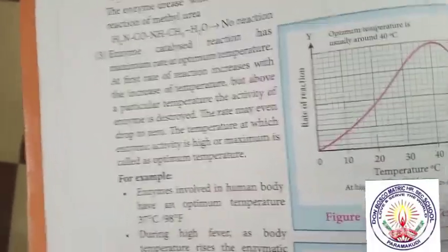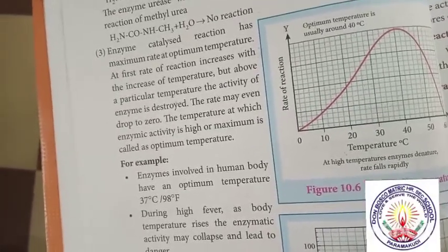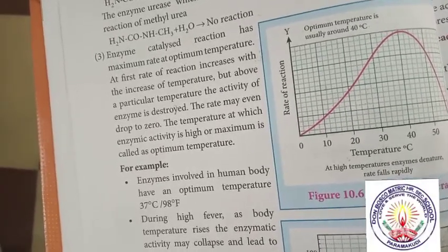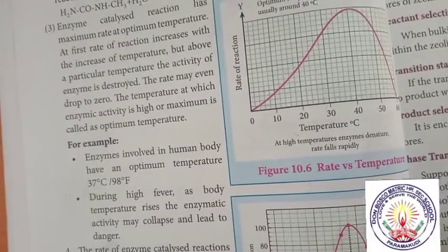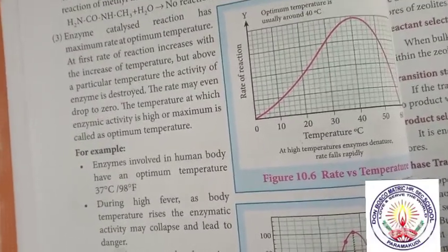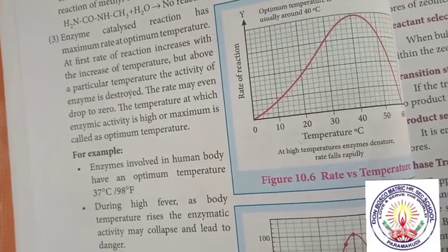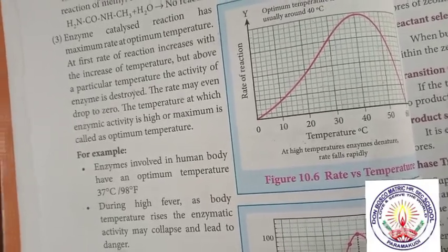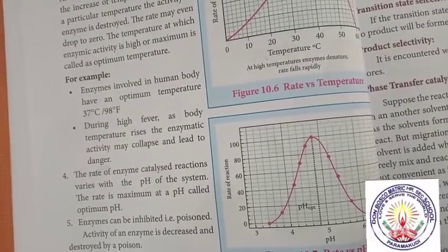For example, enzymes involved in the human body have an optimum temperature of 37 degrees Celsius or 98 degrees Fahrenheit. During high fever, as the body temperature rises, the enzymatic activity may collapse and lead to danger.